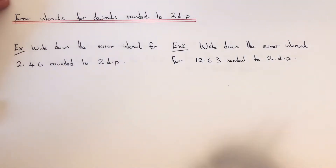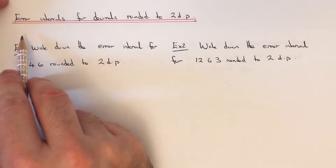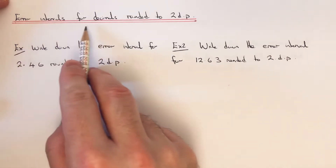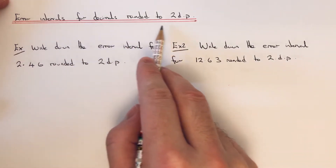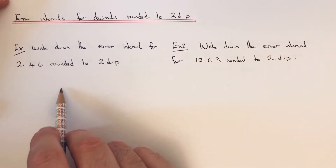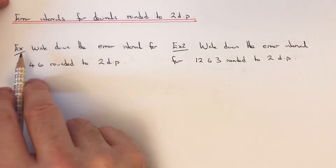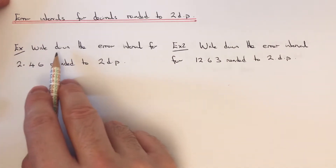Hi guys, welcome back, this is Maths 3000. Today I'm going to show you how to write down an error interval for a decimal rounded off to two decimal places, so let's go straight into the examples here.